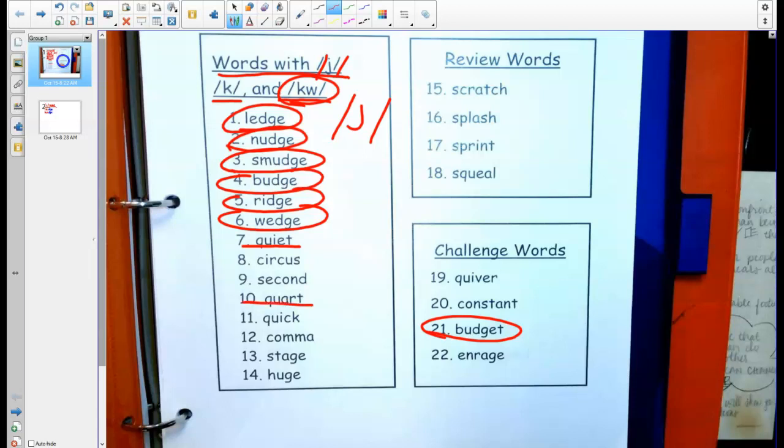Let's go ahead and finish finding all of our Q-U words. So number 10, let's say that together: quart. Number 11: quick. Number 19: quiver. Good. So one, two, three, four. Do you see another one? Eighteen, there you go: squeal. So see how that S-K-W sounds? Squeal, but there's no KW, it's a Q-U.